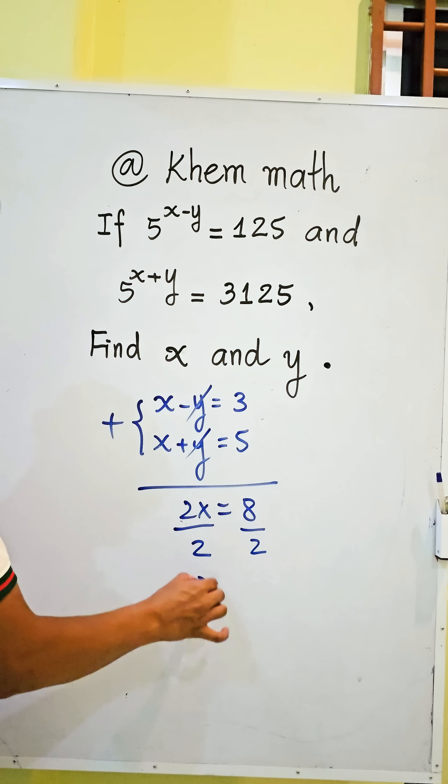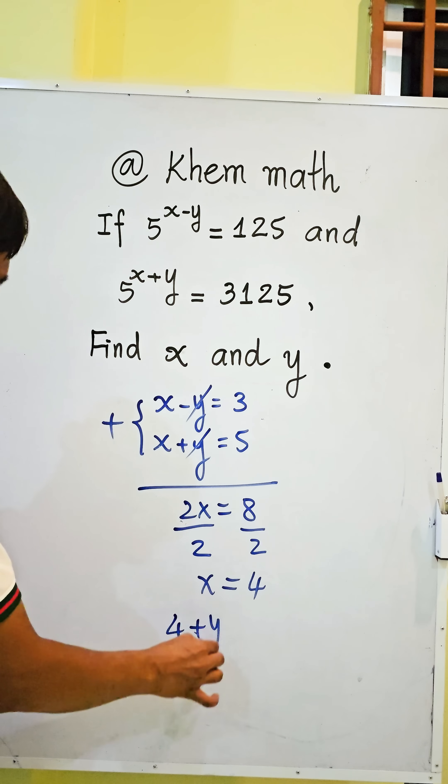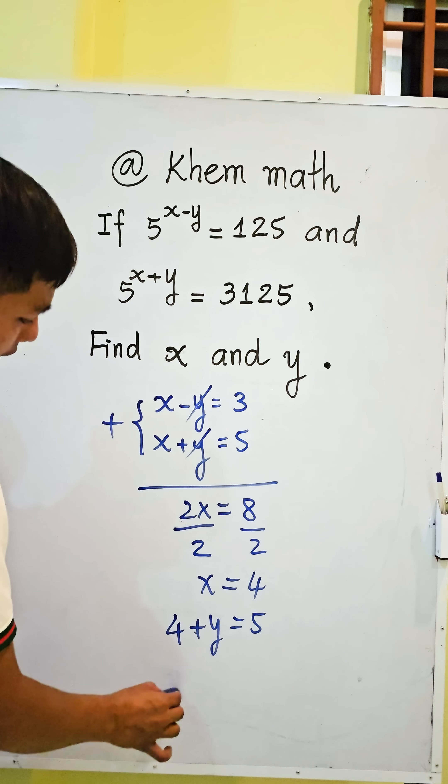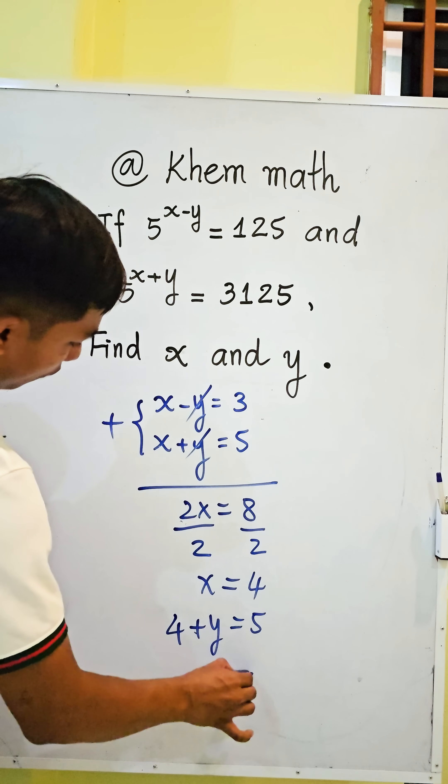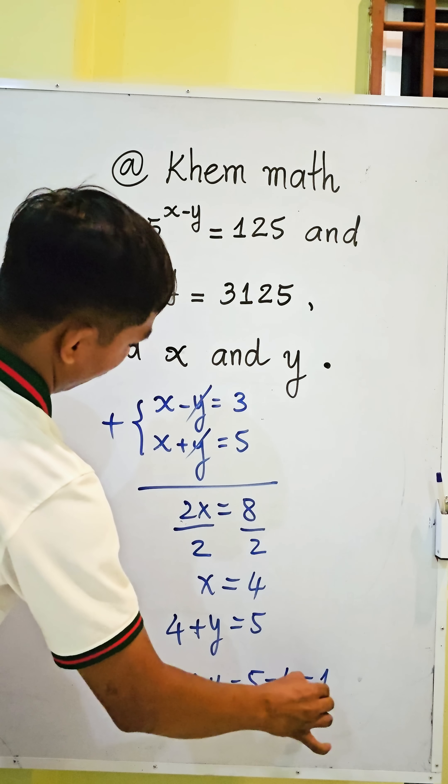So we get x equals 4. And we replace x by 4 in this equation. We get 4 plus y equals 5.